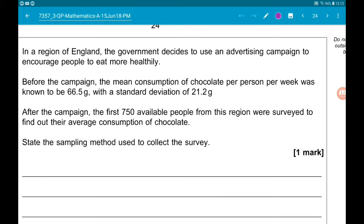After the campaign, the first 750 available people from the region were surveyed to find out their average consumption of chocolate. Part A asks us to state the sampling method used to collect the survey.